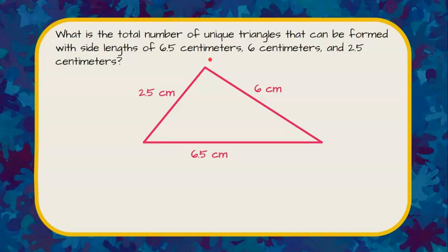So now I need to use what I know about whether or not side lengths could even form a triangle. That's called the triangle inequality theorem which states that any two sides of a triangle must be greater than the remaining third.